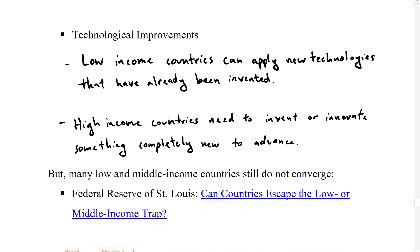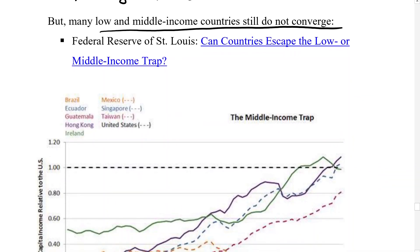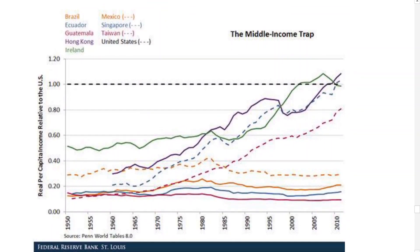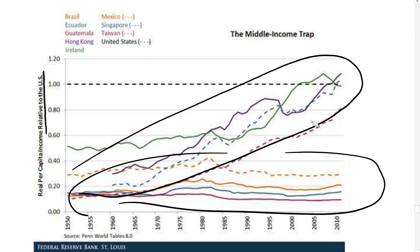We do see that convergence phenomenon typically, but some of these low- and middle-income countries still do not converge, and that's what we call the middle-income trap. This graph is normalized relative to the United States, so the dotted line at the top represents the US — its growth normalized by itself equals one, making comparisons easy. Back in 1950, Ireland was about half the size of the United States, Mexico was about a third, and all of the others were a little less than 20% of the size. Some of these countries have converged, but some have stagnated in what we call the middle-income trap.